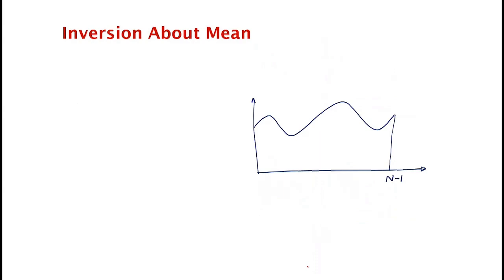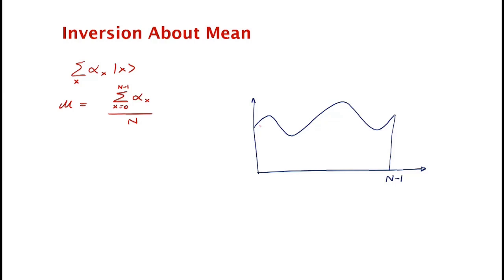The second operation is called inversion about the mean. We start with a superposition sum alpha_x |x⟩ over all x. What does this inversion about the mean do? We let mu be the mean — it's the summation of alpha_x divided by N — so it's just the average value of all the amplitudes.